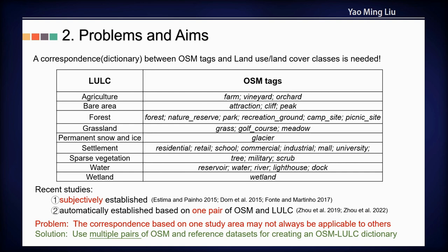In recent studies, correspondences are mostly established in two methods: subjectively, or automatically based on one pair of OSM and reference data. Both methods may lead to a problem — the correspondence based on one study area may not always be applicable to others.